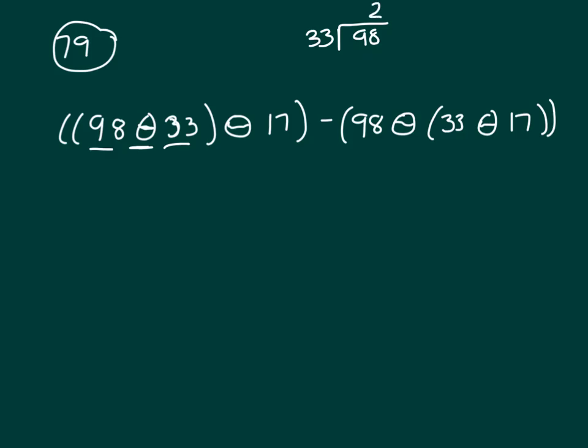Okay, and the remainder is going to be 32. Can you see that? Two times three is six, two times three is six, and that gives you 32.